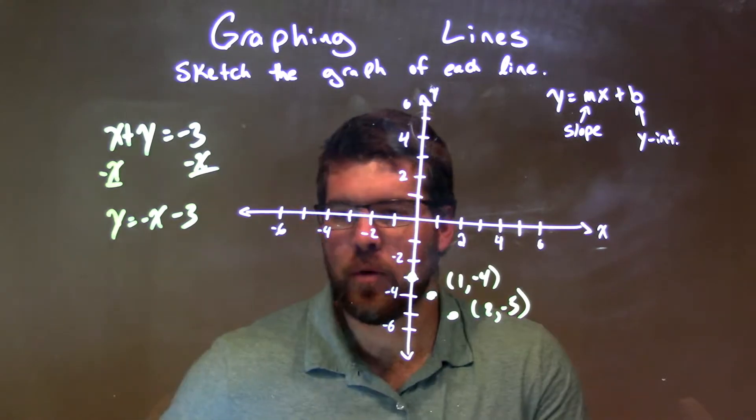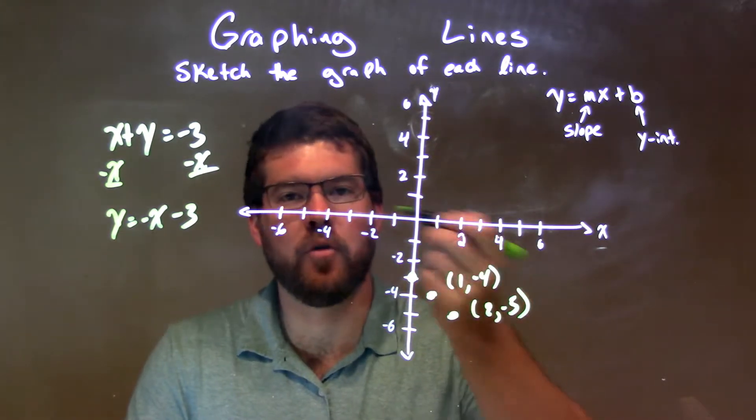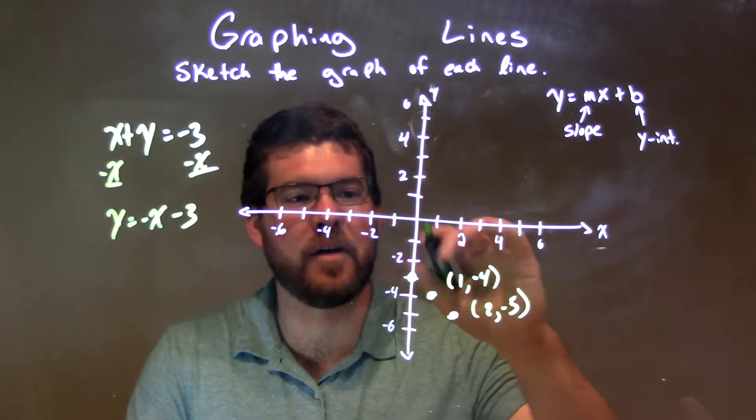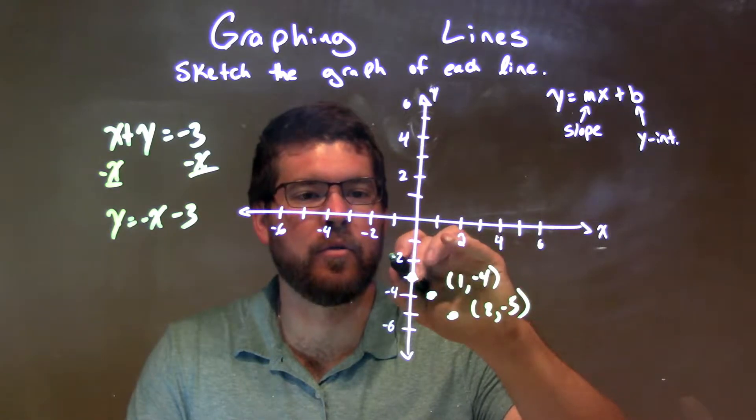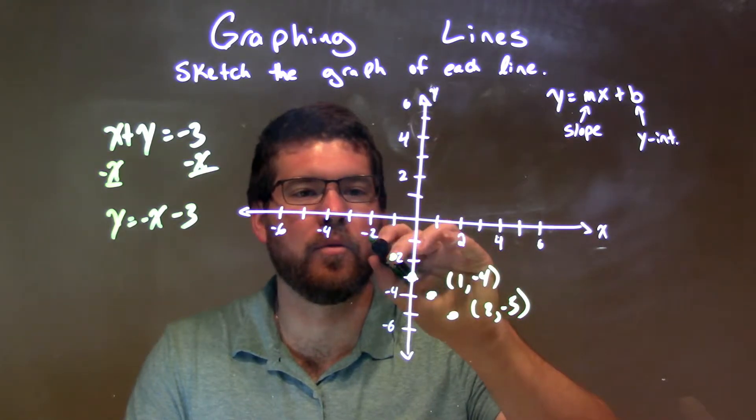That's the same thing if we go up 1, over 1 as well. So up 1 to the left, up 1, and then over to the left 1. So up 1, over 1 right here, and up 1, over 1.